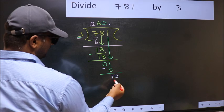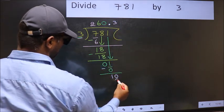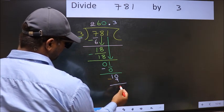So 10. A number close to 10 in 3 table is 3×3, 9. Now you should subtract. 10 minus 9, 1.